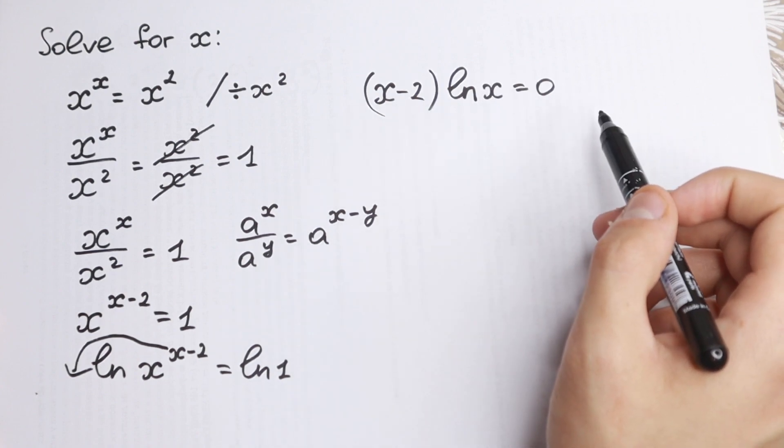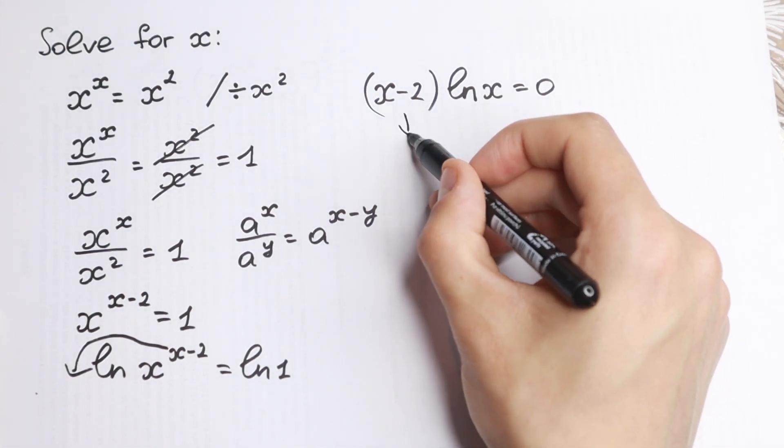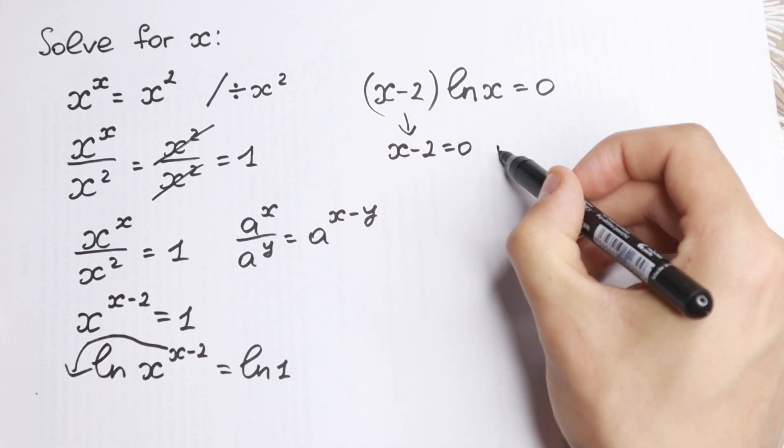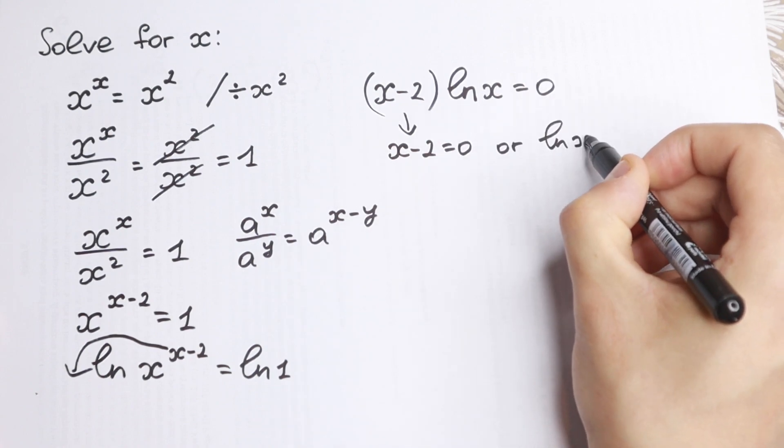We have a product of two elements. So when this equals 0 we have x minus 2 equal to 0 or natural log x equal to 0.